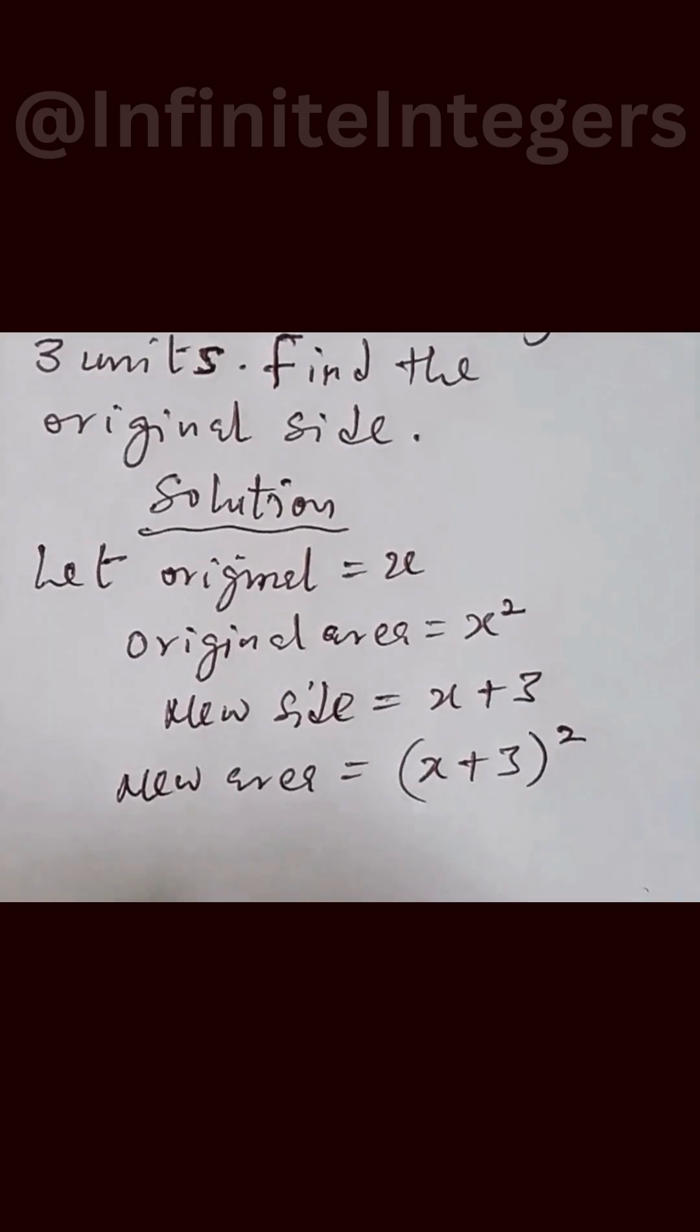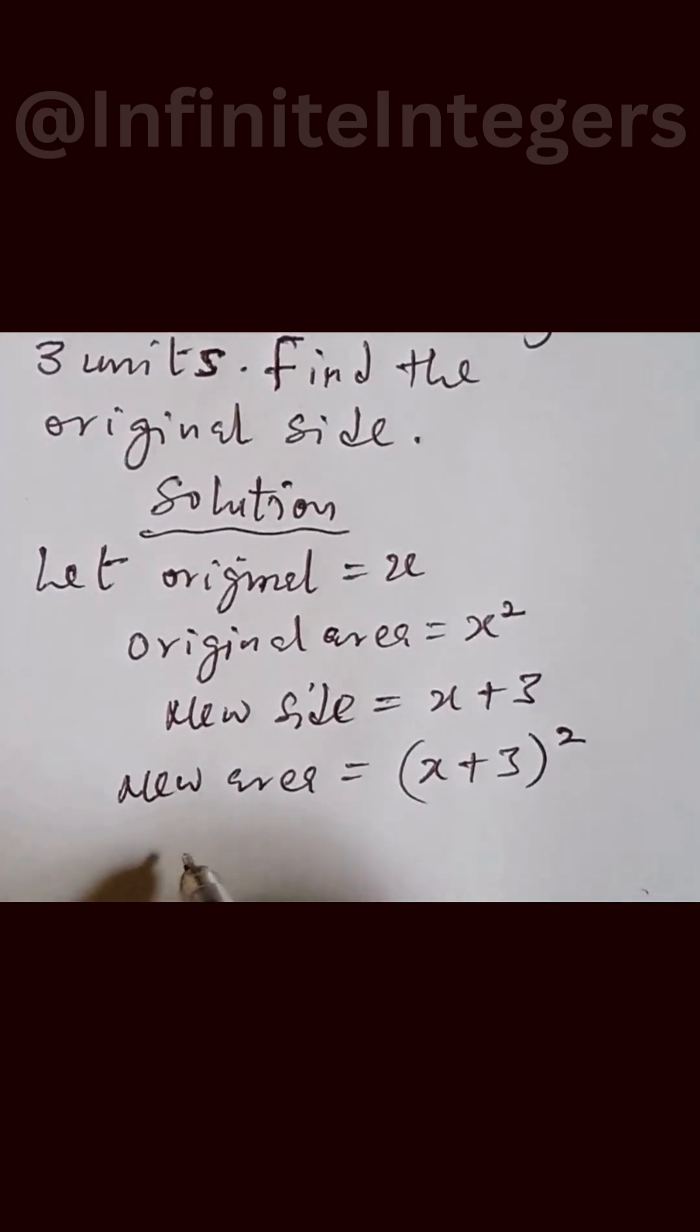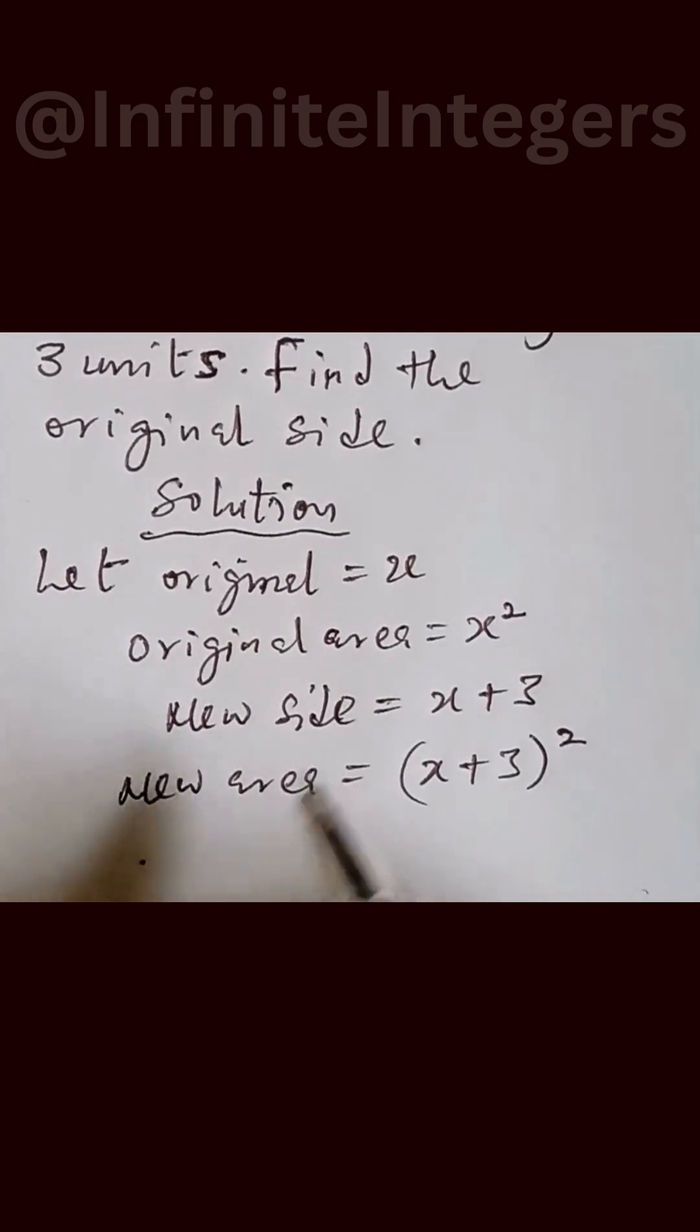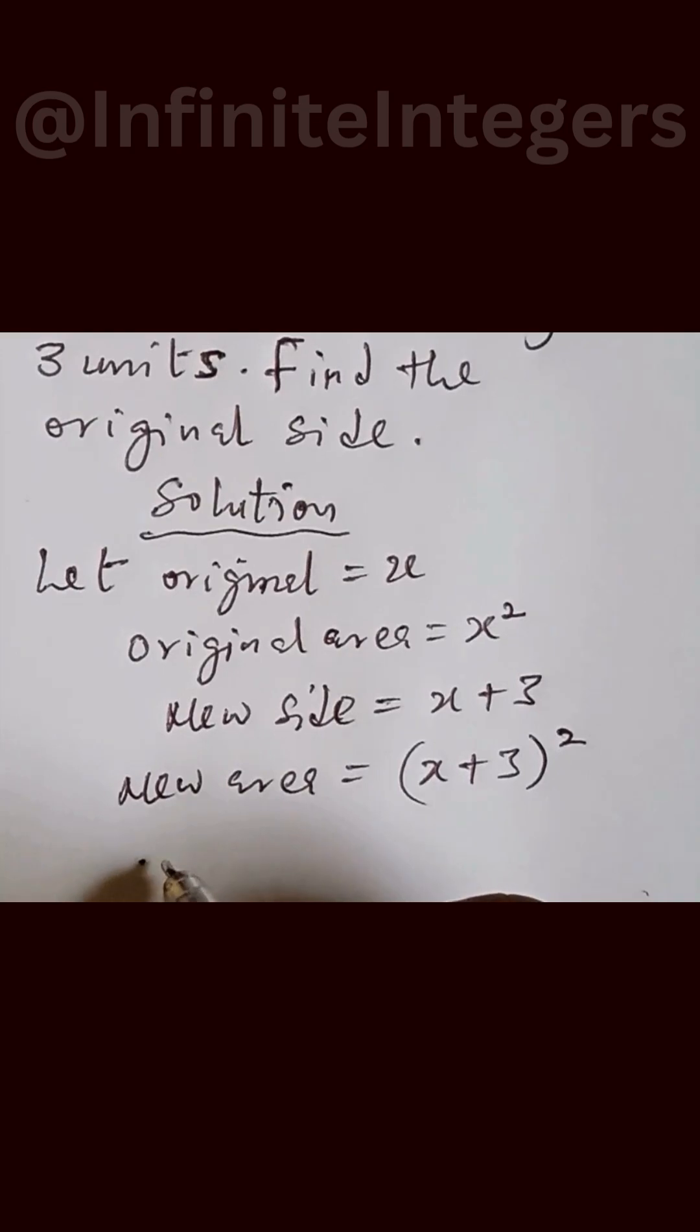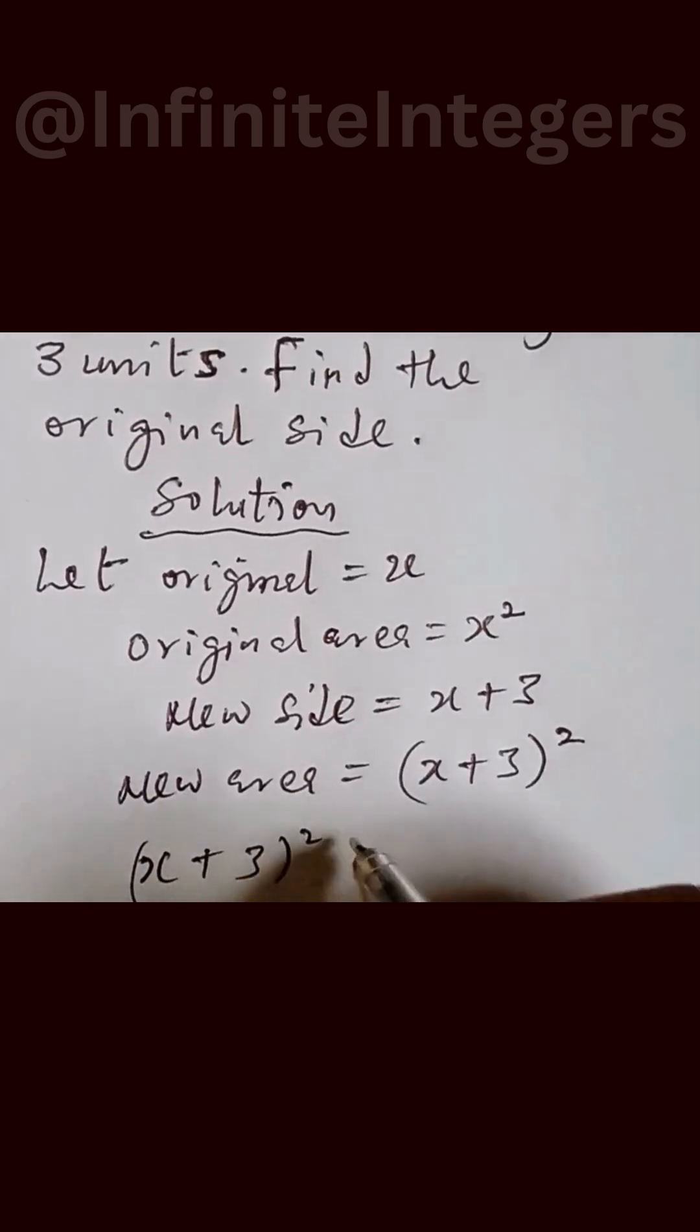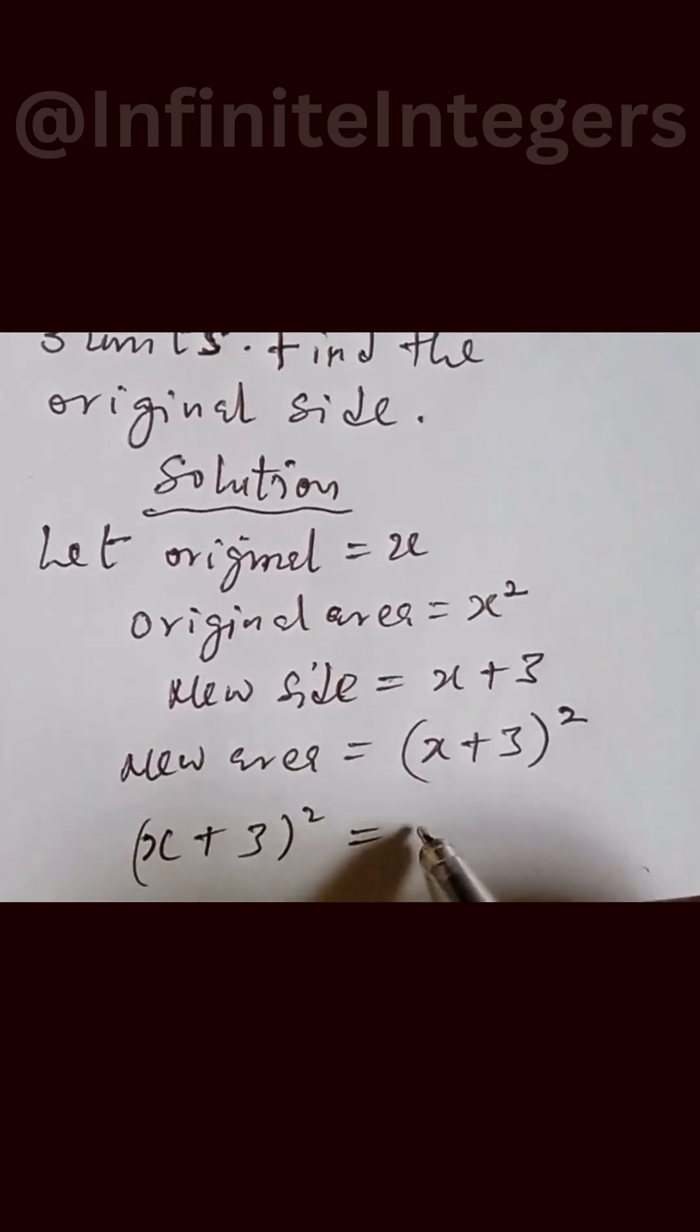From here, given that it increases by 36, we now have that our expression will form with the new area equal to the previous area that was increased by 36, which is x plus 3 squared equals x squared plus 36.